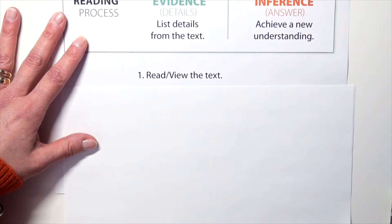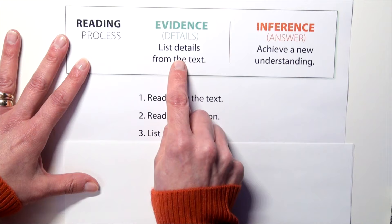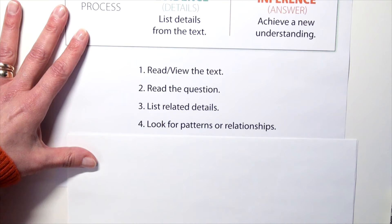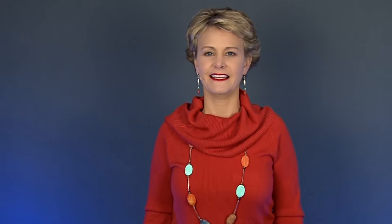Step one: read the text and ask the question — make sure they understand it. Then they need to list the relevant or related details from the text that would help them make the inference eventually. That step three is huge. Then they need to think about what those details mean — the patterns, the relationships, how they go together. It's this thinking in step four that ultimately leads them to the inference.